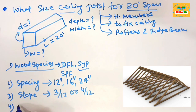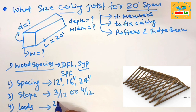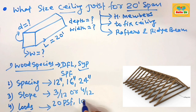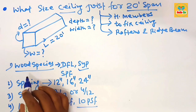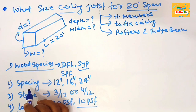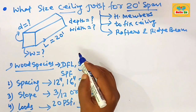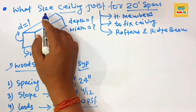The fourth factor is your load condition — the expected load may be 20 pounds per square foot or 10 pounds per square foot. Wood species, spacing between joists, slope, and load condition are the major factors that determine the size of the ceiling joist.